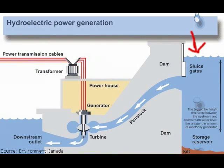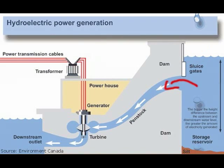Water is stored in the reservoir. The gates are then opened, which lets the water through into the penstock, which allows the water to flow to the turbine, turning the generator.